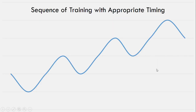An appropriate sequence of training would look something like this graph here. We start at our initial baseline fitness level, then have a training session and an initial decrement in performance, followed by a supercompensation. If we then do a training session at the correct time, we have another initial decrement followed by another supercompensation, and that trend continues.